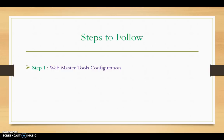Whatever settings you want, you need to go to the webmaster tools and configure your site — submit your sitemap and set a good geographical location like India, Pakistan, Bangladesh, or wherever you want. Once you complete the webmaster tool configuration, move on to the second step.